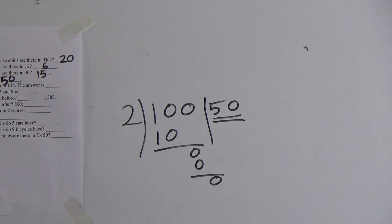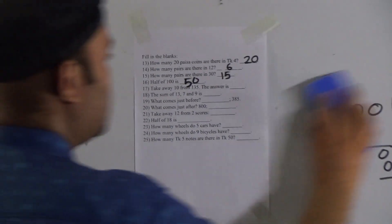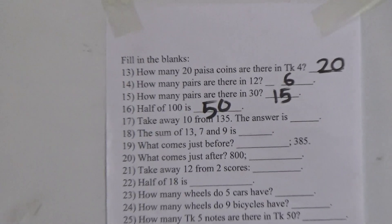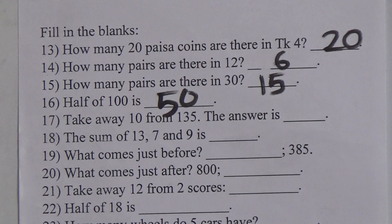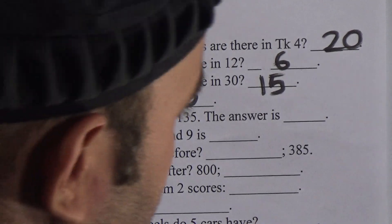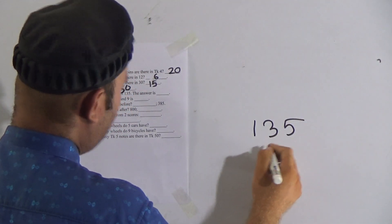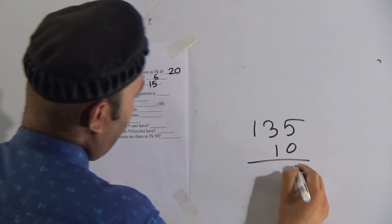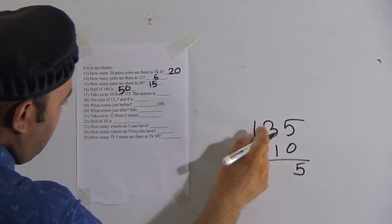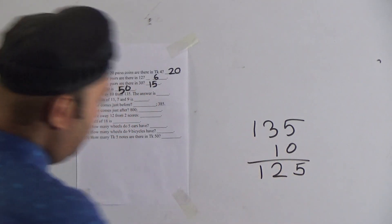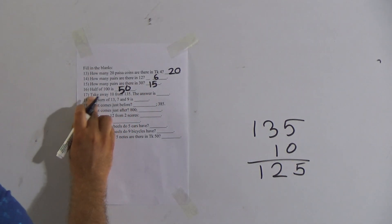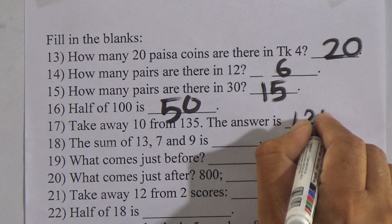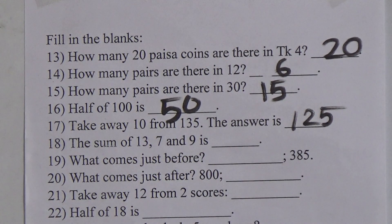Number 17: take away 10 from 135. The meaning of 'take away' is subtraction, so we have to subtract 10 from 135. Working it out: 0 from 5 is 5, 1 from 3 is 2, and 1 remains. So take away 10 from 135 is 125.